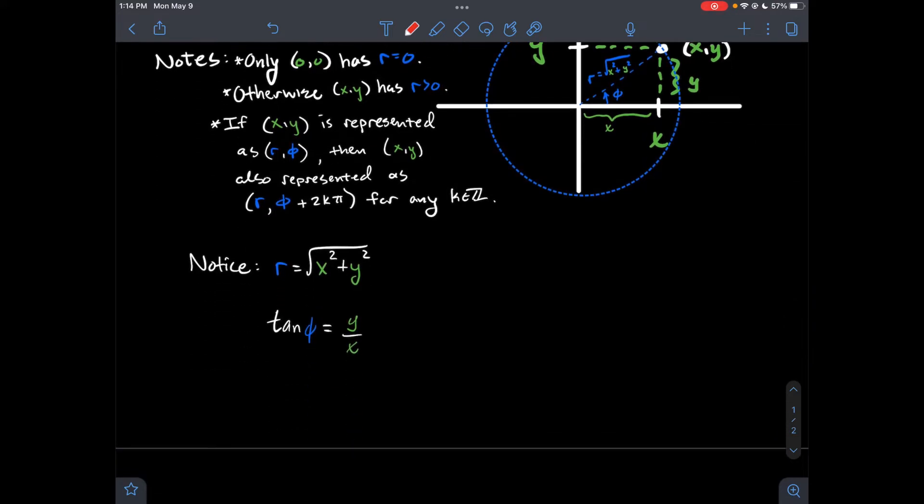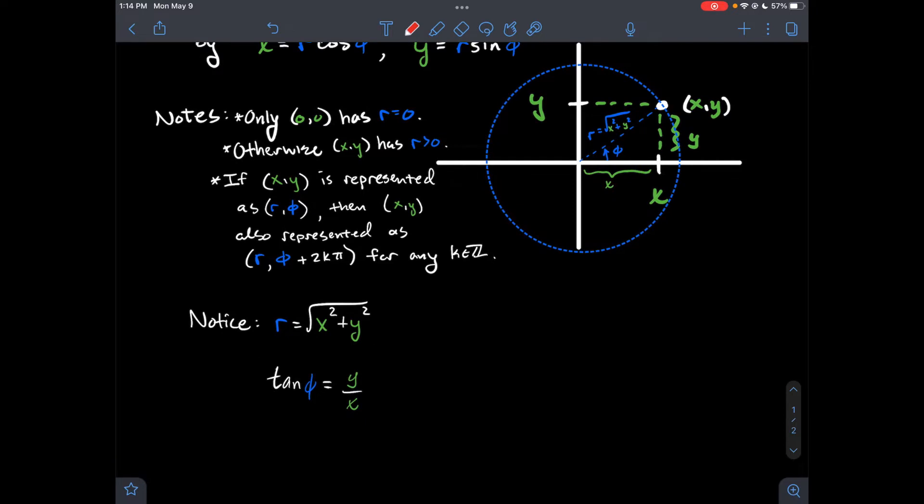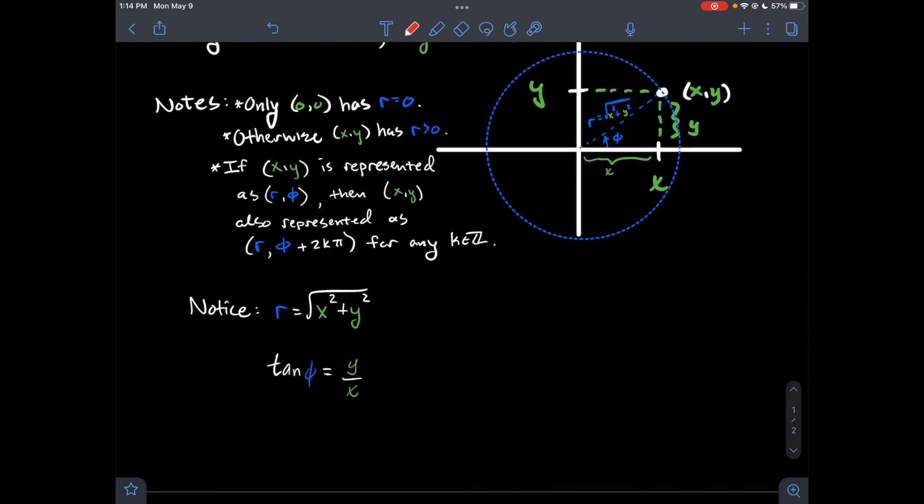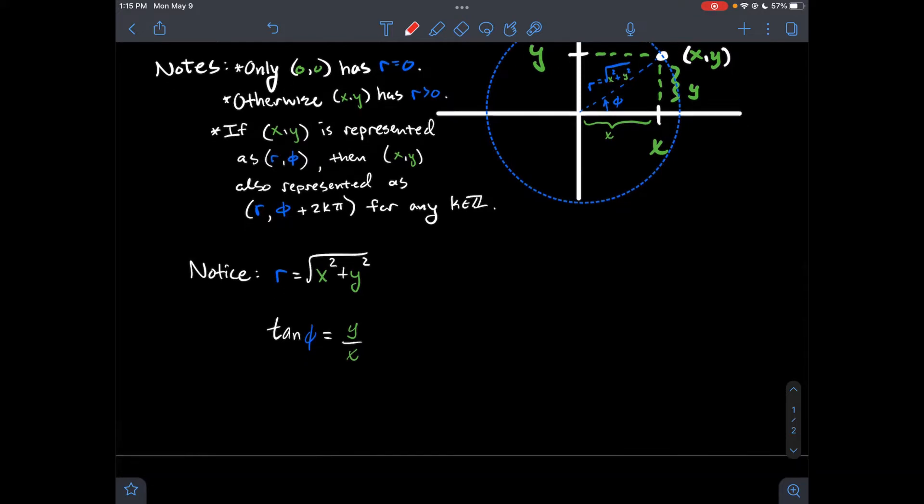All right, so again, some things to notice. The radius is just the square root of x squared plus y squared. And that angle, if you think about tangent of phi, tangent is what? Opposite over adjacent. And if you look at that triangle I got in there, the opposite, the side opposite of phi is y. And the side adjacent to phi is x. So, of course, tangent of phi is y over x. So that's another connection between my two sets of coordinates, rectangular coordinates and rectangular coordinates. I think I just said rectangular twice. Rectangular coordinates and polar coordinates.